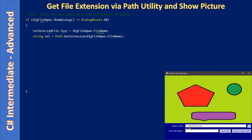In the TextBox above, we see the user selected test.bmp from the G partition temp folder. To check whether the user picked an image file, we make use of the Path utility class. The GetExtension method returns only the extension part — in this case, BMP — and we store that in the variable ext. If the user had selected a text file, ext would store the extension txt instead.